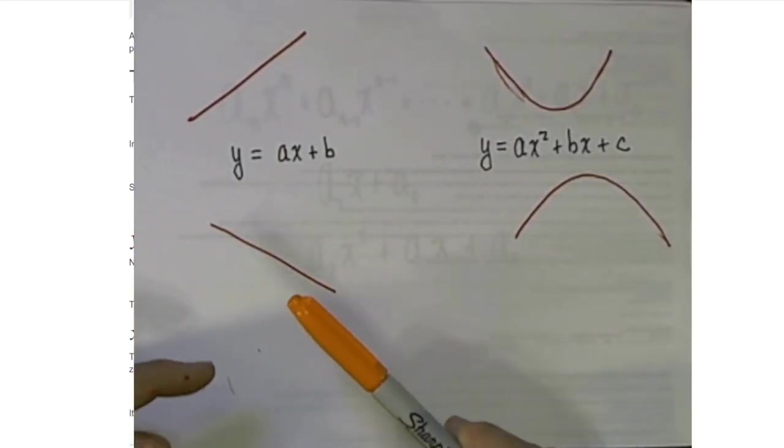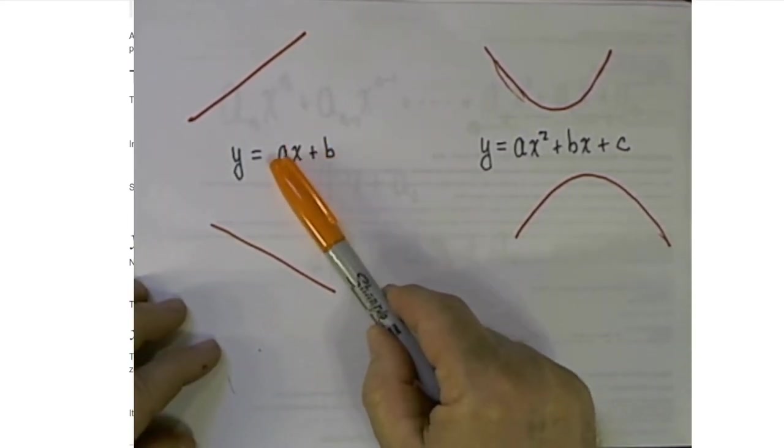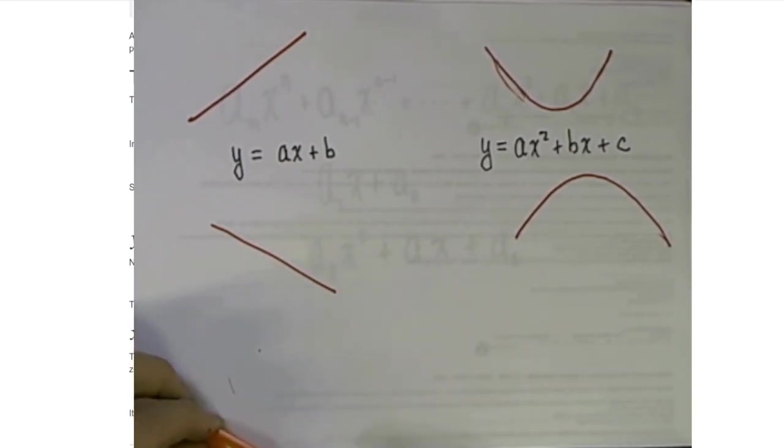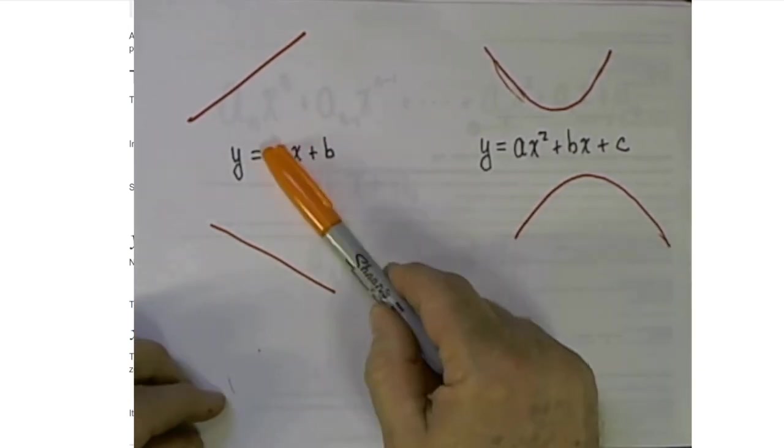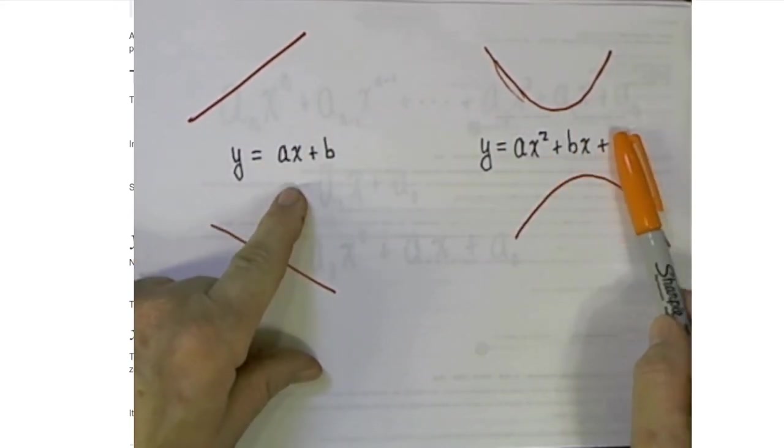Now in any of these functions, if we wanted to know where the function crossed the y-axis, that would happen when the x value is zero. Notice that every point on the y-axis has an x value of zero.